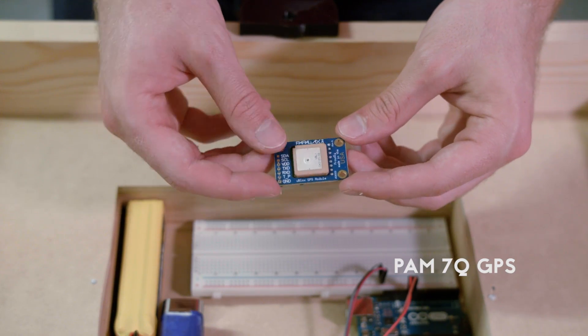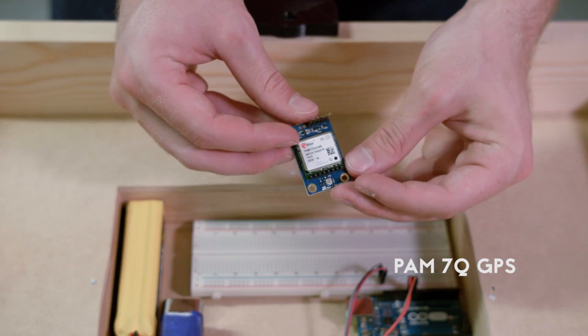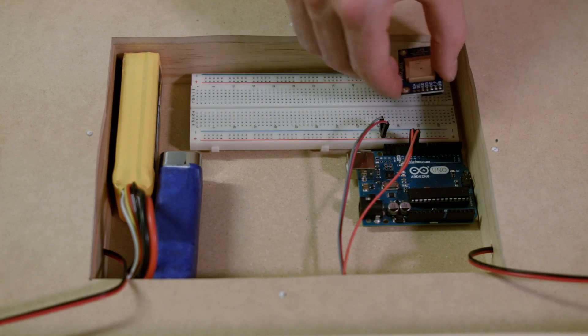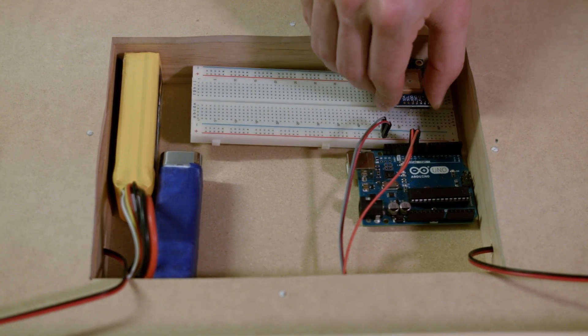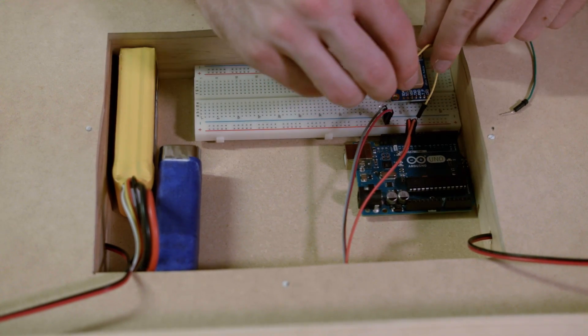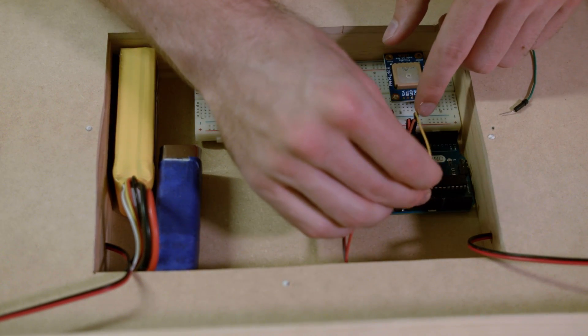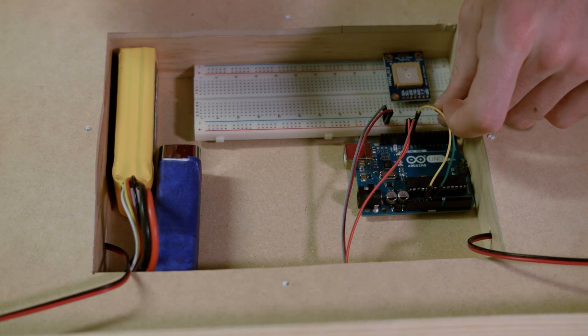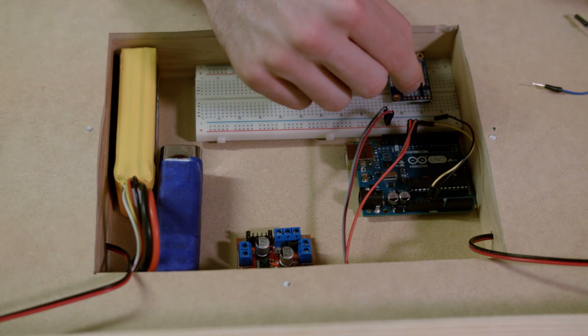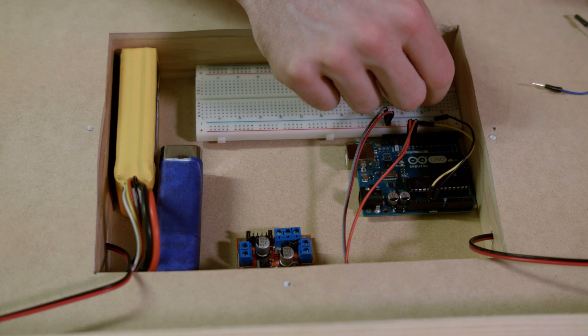We're using a pretty high precision GPS module for this project just because we want more accuracy. This is the PAM 7Q GPS. It retails for about $50 but you can get a cheaper GPS if you want less accuracy. We just wired this up to power and ground and then there's one transmit pin that we have to wire to one of the ports on the Arduino.